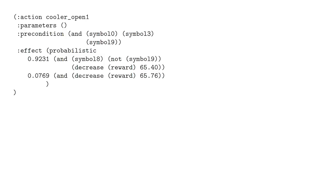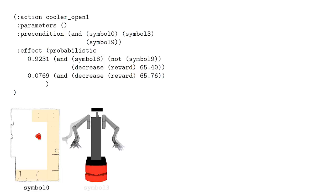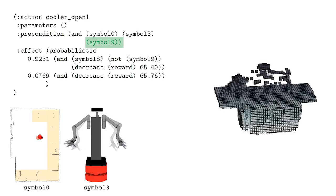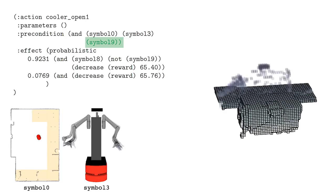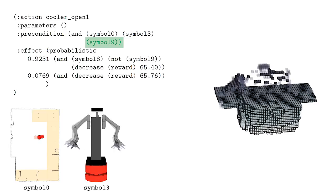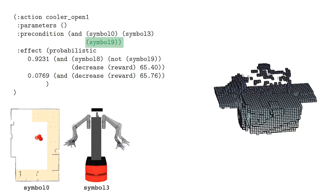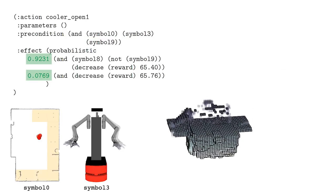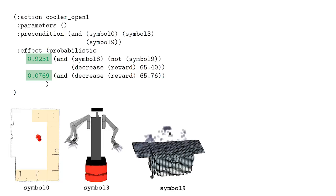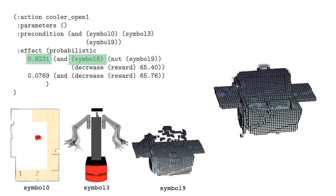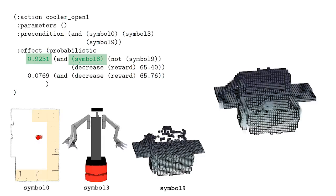Here's a similar operator for opening the cooler. Symbols 0, 3, and 9 must be true, indicating that Anna is in front of the cooler, not holding anything, and that the cooler is closed. Here there are two possible outcomes, each labeled with a probability. Either Symbol 9 becomes false, and Symbol 8 becomes true, which means that the cooler opens,